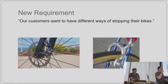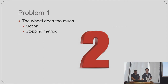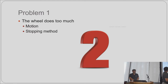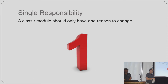As we deal with all the time, a new requirement comes in: customers need a different way of stopping their bikes. We had caliper brakes implied in the previous example, now they want disc brakes. The problem is that the wheel does too much — it has two purposes: motion (it turns) and stopping. How it stops is an axis of change, which goes back to the Single Responsibility Principle: a class or module should only have one reason to change.